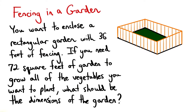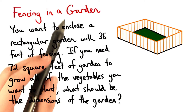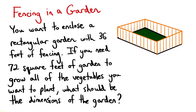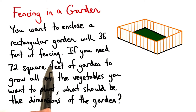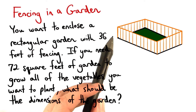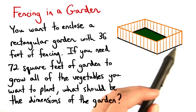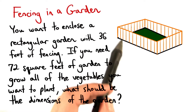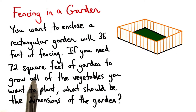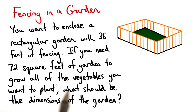Let's try our second problem using area and perimeter. This time we're going to fence in a garden. You want to enclose a rectangular garden with 36 feet of fencing. So, this would be the fencing around your garden. If you need 72 square feet of garden to grow all the vegetables you want to plant, what should be the dimensions of the garden?